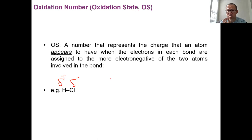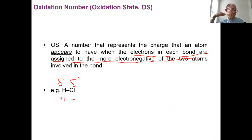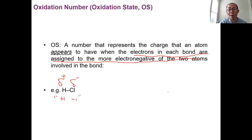Based on this compound, if we assume the bond electrons are all given to chlorine — because chlorine is more electronegative — then chlorine would carry a negative charge of -1, and hydrogen would carry a charge of +1. Again, those two charges are not real, but they are called oxidation numbers. So the oxidation number of chlorine in HCl is -1, and the oxidation number of hydrogen is +1, assuming the electrons are all given to chlorine.